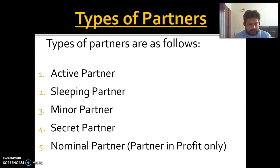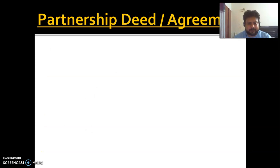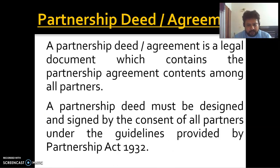We discussed types of partners: active partners, sleeping partners, minor partners, secret partners, and nominal partners. Sleeping partners invest in the business but do not play an active role in management. Minor partners are under 18 years old. Secret partners are not publicly disclosed. Nominal partners share in profit but not in losses. The partnership deed is a legal agreement, and it should comply with the Partnership Act of 1932.